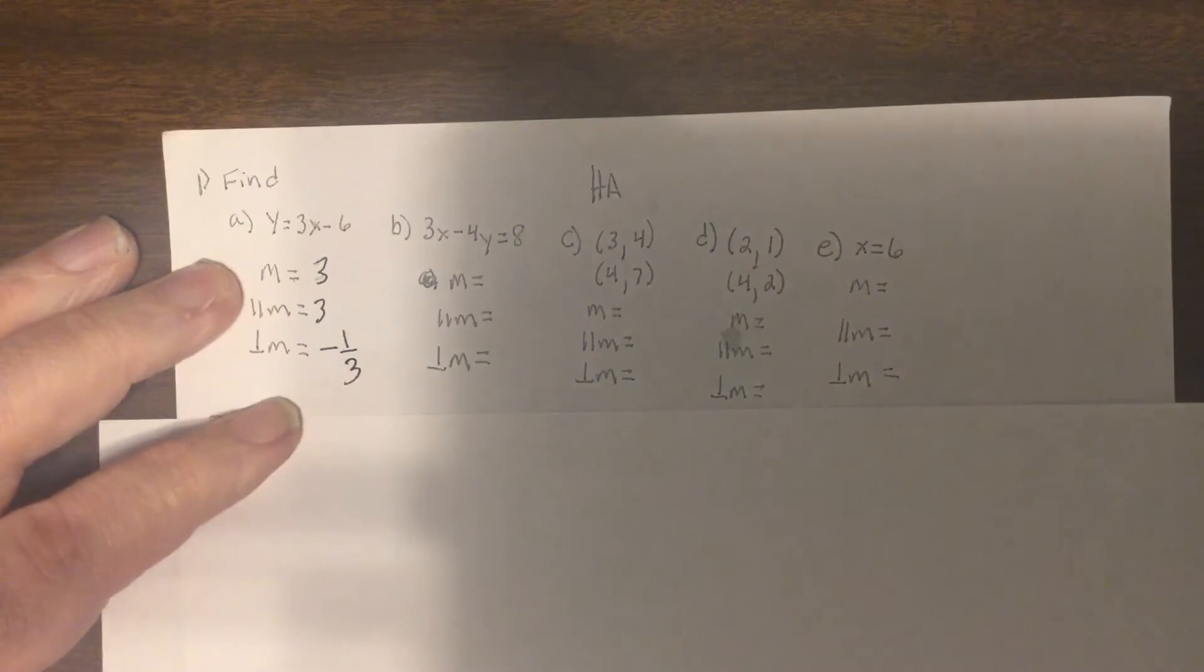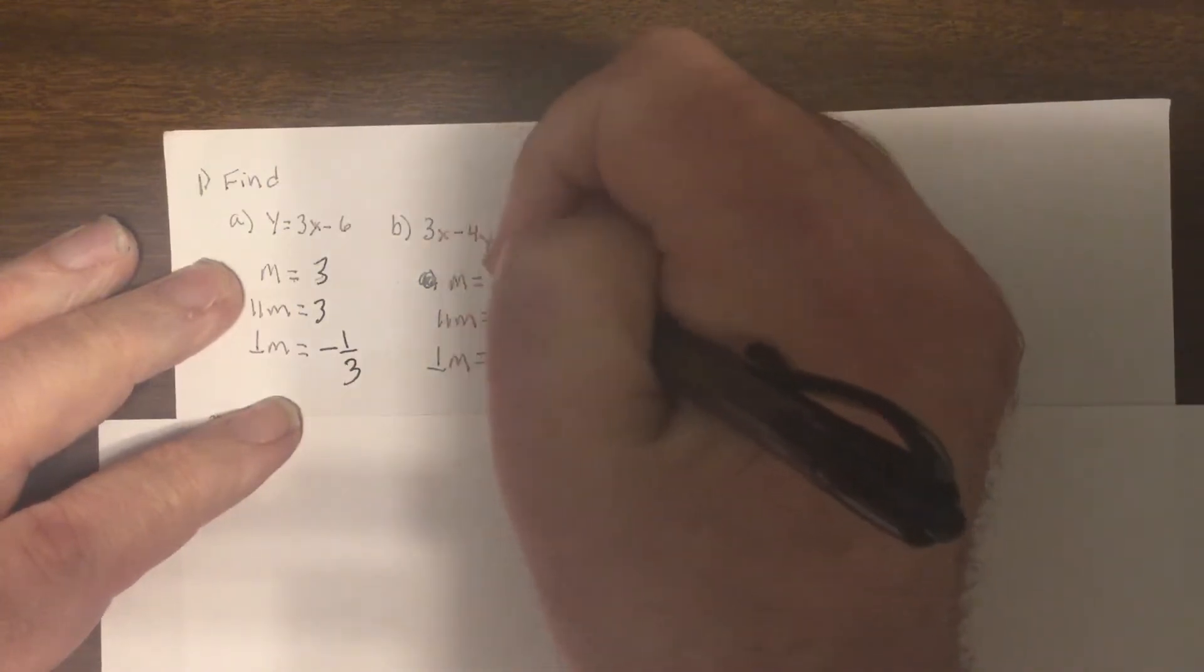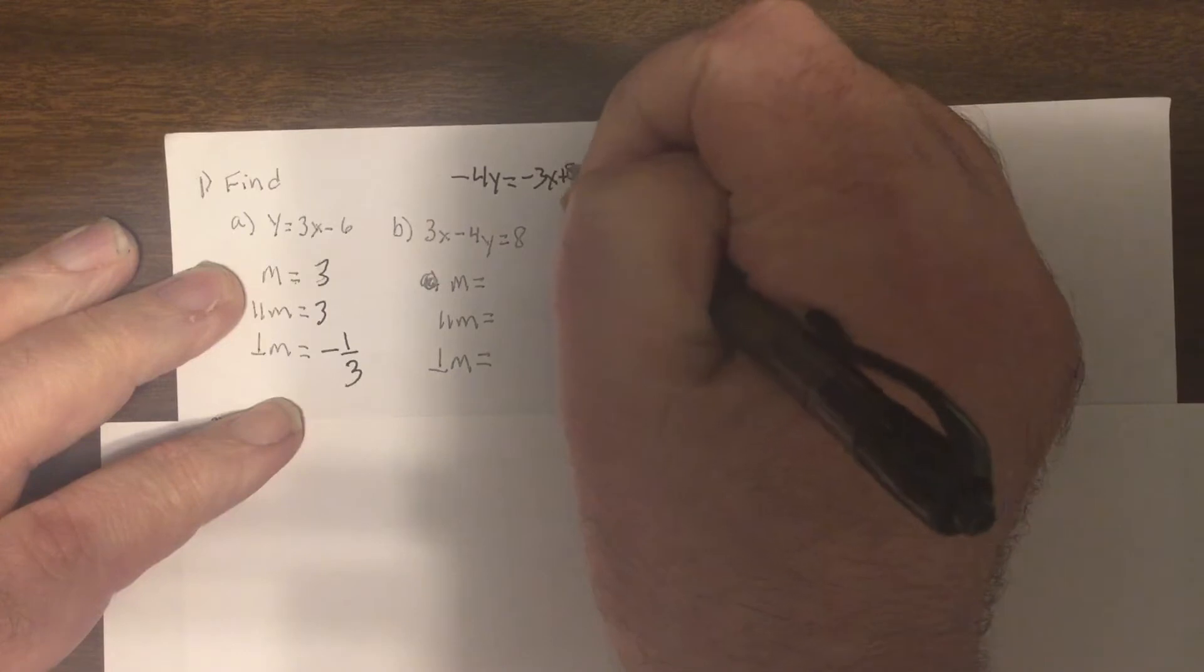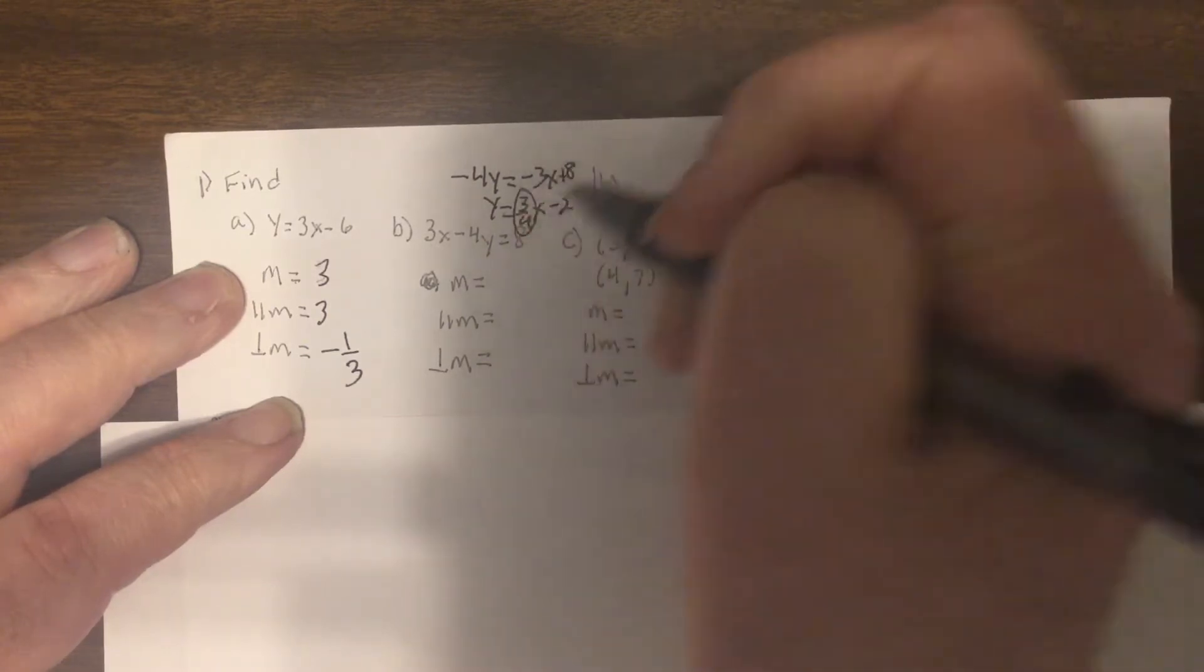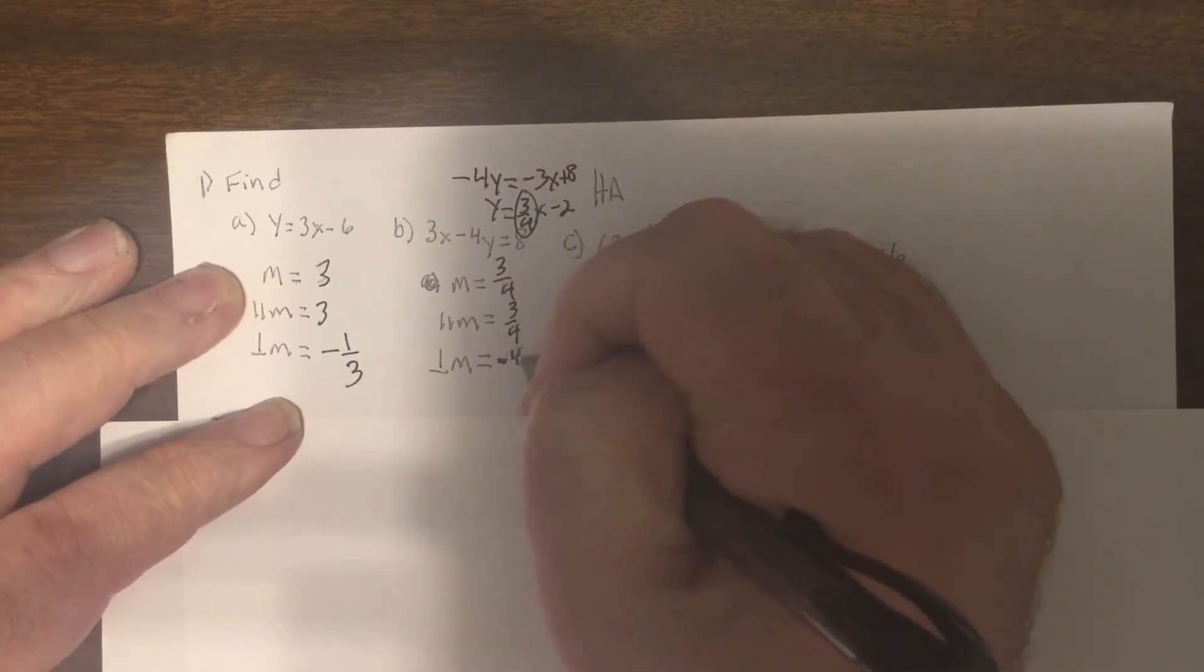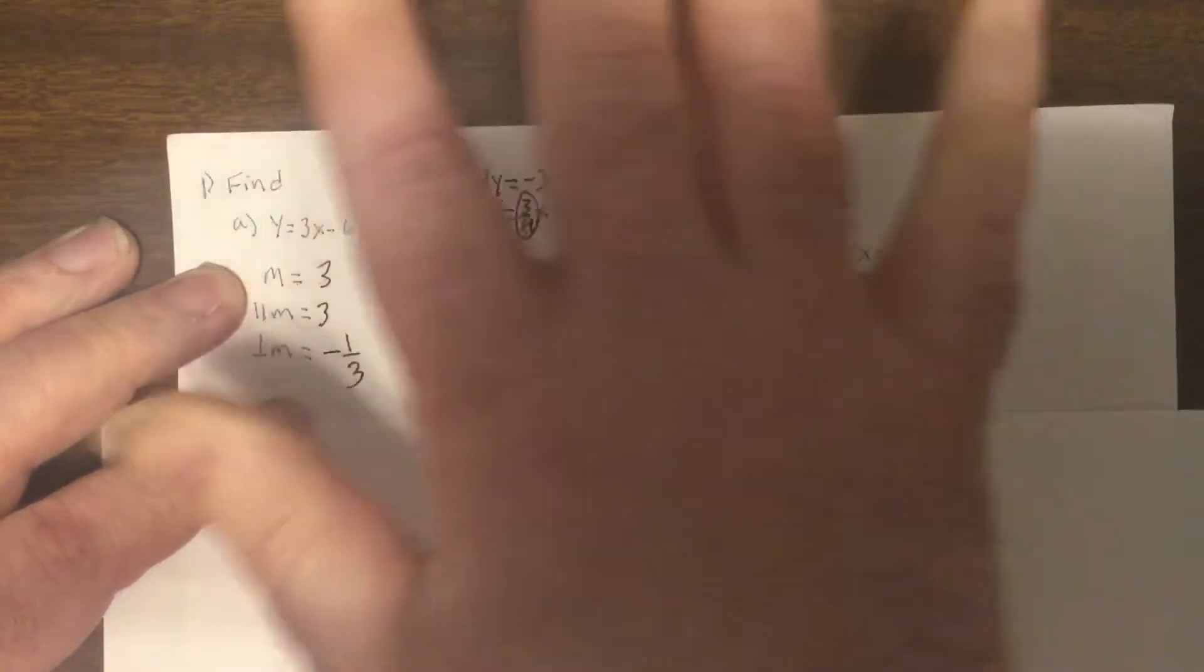Next one. Solve it for y. So minus 4y equals negative 3x, because I subtracted 3x, plus 8. Divide by negative 4. So it's 3 fourths x minus 2. But this part really doesn't matter because I just need the number in front of x. So it's 3 fourths. So the parallel is 3 fourths. The perpendicular is negative 4 thirds, because perpendicular is opposite flip, opposite flip.